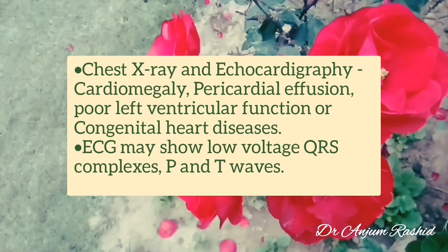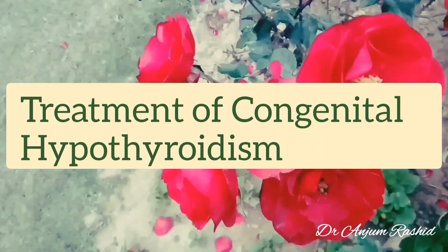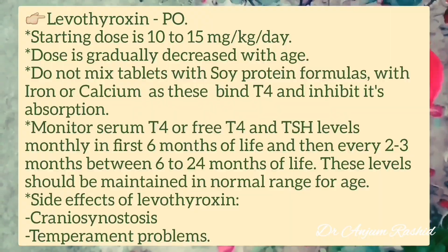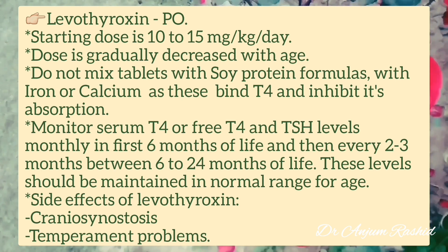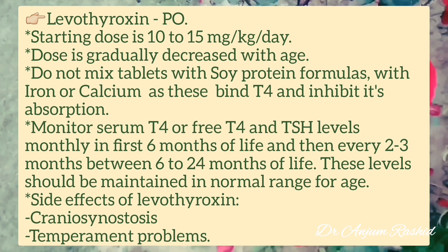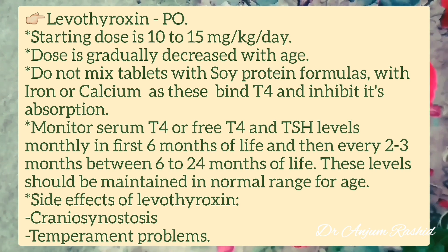ECG may show low voltage QRS complexes, P and T waves. For treatment of congenital hypothyroidism, oral levothyroxine is given. The starting dose is 10 to 15 micrograms per kg per day, and the dose is gradually decreased with age. Do not mix the tablets with soy protein formulas, iron, or calcium, as these bind T4 and inhibit its absorption.